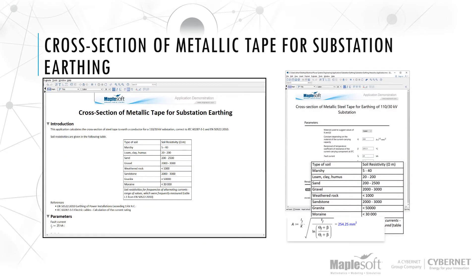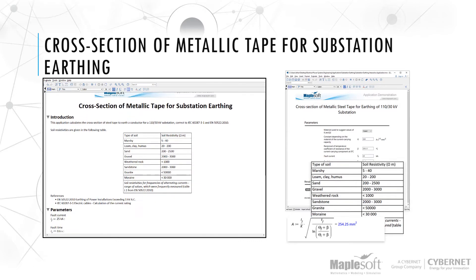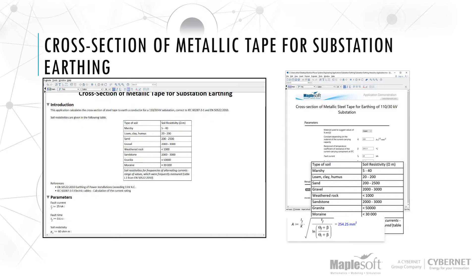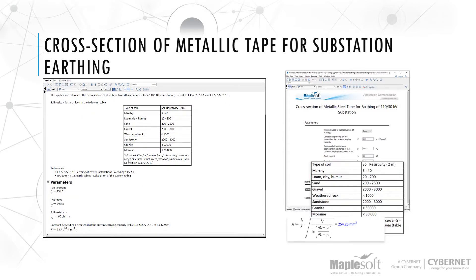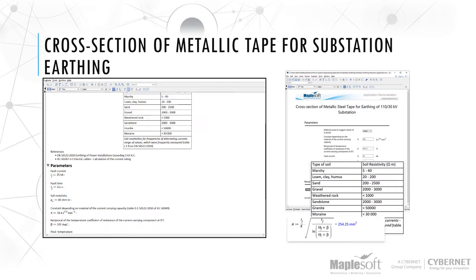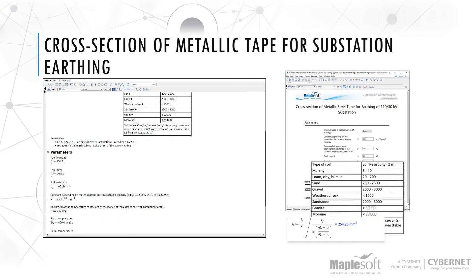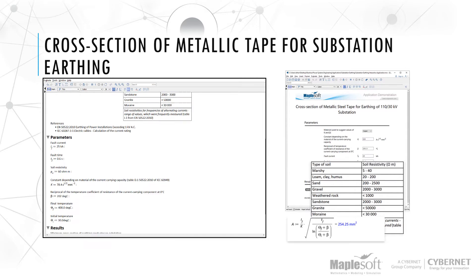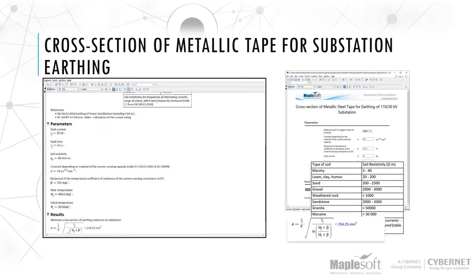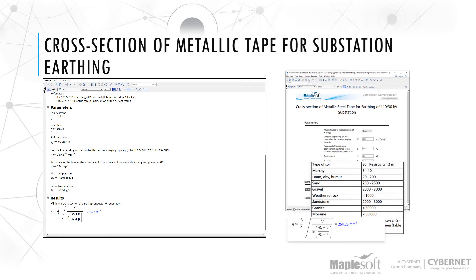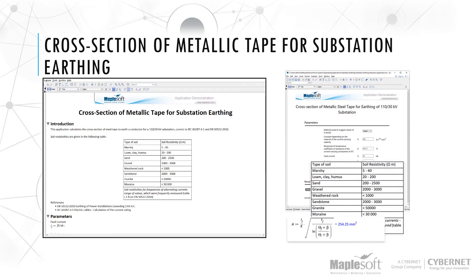Cross-section of metallic tape for substation earthing. Substation earthing systems are a grid of buried conductors known as an earth mat. The grounding of substations is very important for both personnel safety and to provide a discharge route for the overall power system. This application calculates the cross-section of metallic tape to earth a conductor for a 110/30 kilovolt substation.